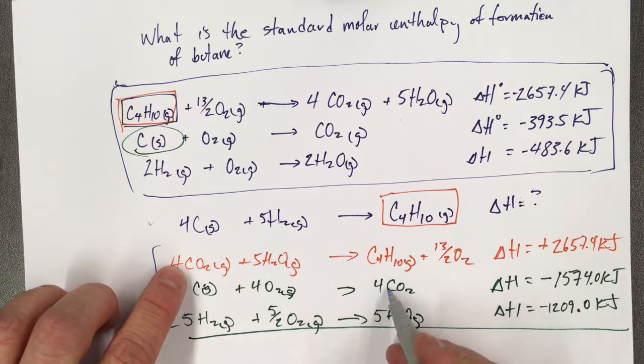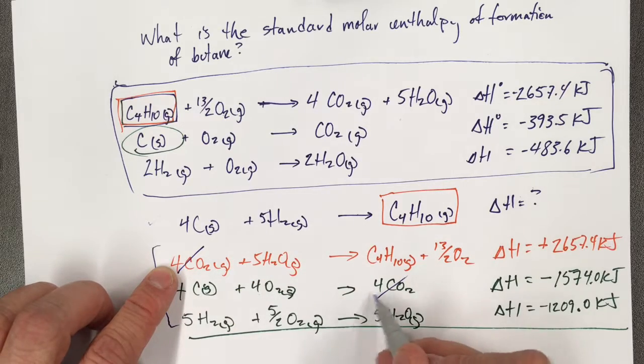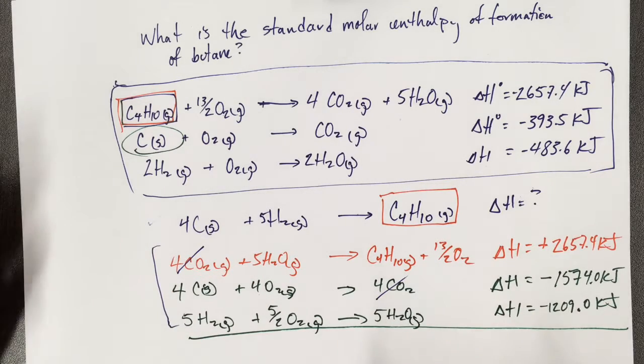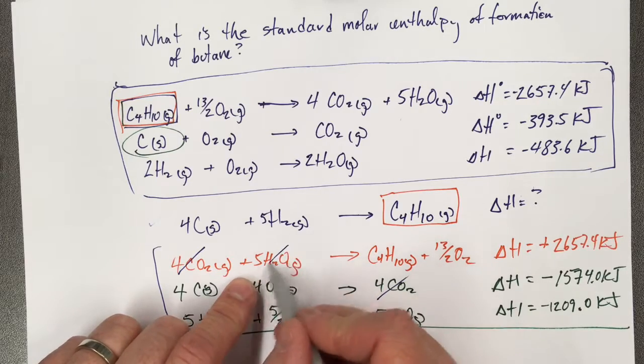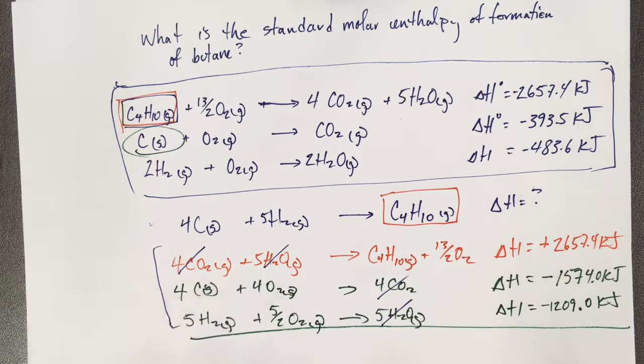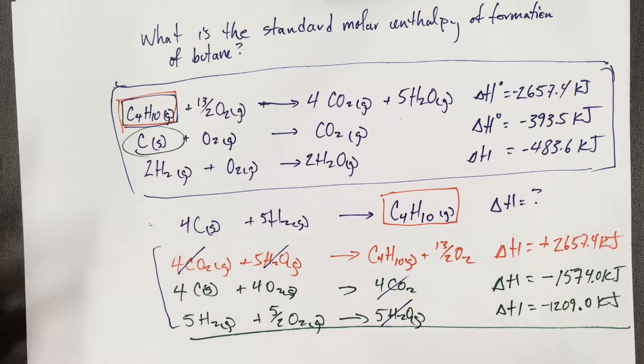But I've got 4 carbon dioxides here and here. So if I'm using 4 carbon dioxides and making 4 carbon dioxides, they cancel out. And then I've got 5 water vapors here and I've got 5 water vapors here. I'm using these and making these, so they cancel out.